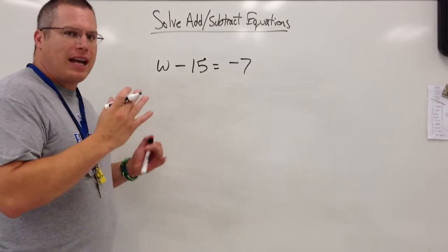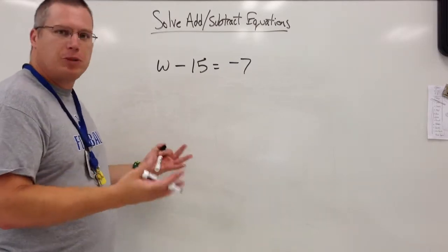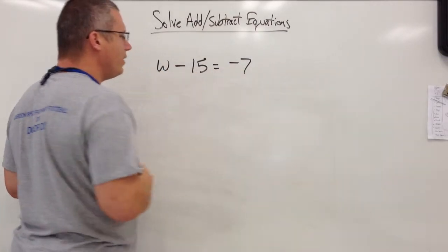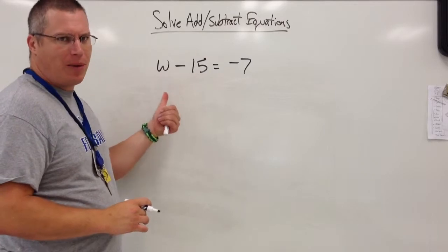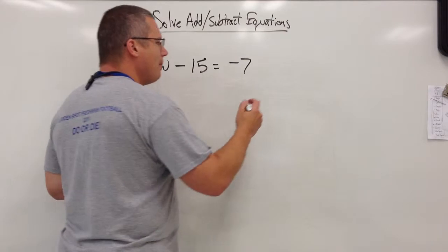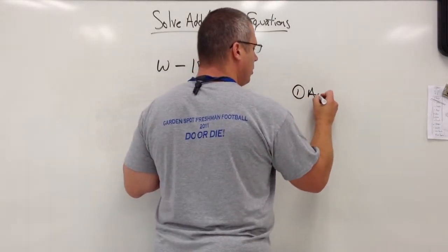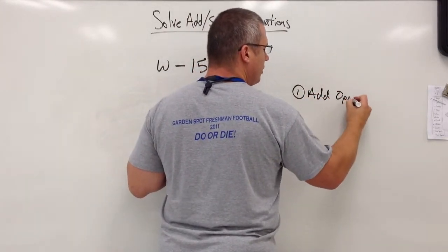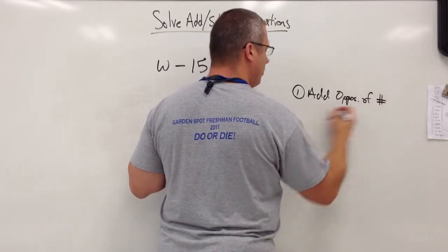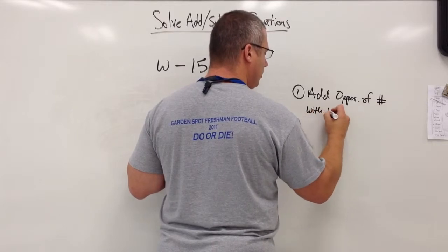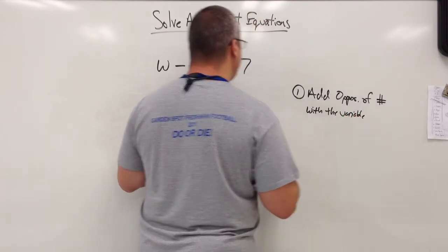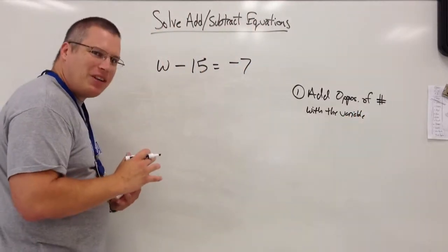But you say, Mr. Wong, that was just addition equations. What about subtraction equations? Here it is. A number minus 15 equals negative 7. Listen, I'm not even going to try to think about what W should be right now. I'm going to use my solving to help figure it out. And if you remember, my rule simply is this. I'm going to add the opposite of the number that is with the variable.